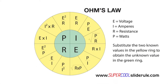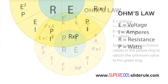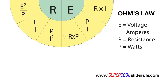Hello, Brian Nolten back with another super cool slide rule tutorial. In this tutorial we will learn how to convert resistance and amps to voltage using the Ohms law wheel. If you have a super cool slide rule, get it out and turn it to the back.